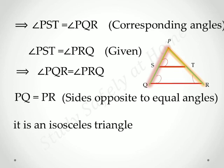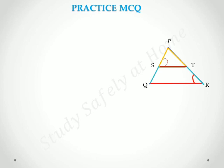So, PQR is an isosceles triangle. Here are some MCQs for you.